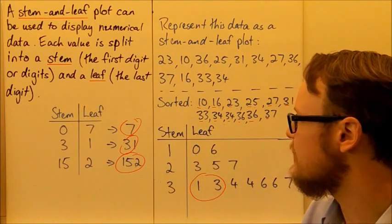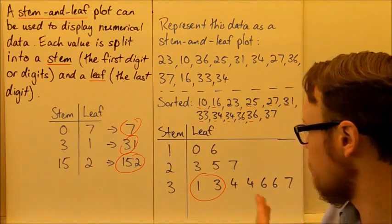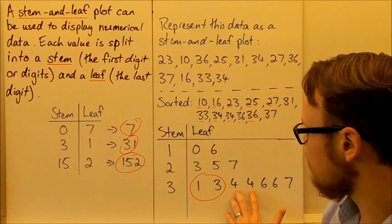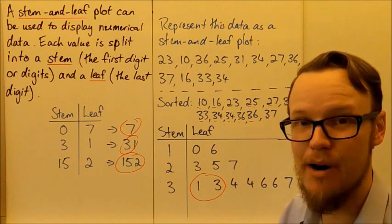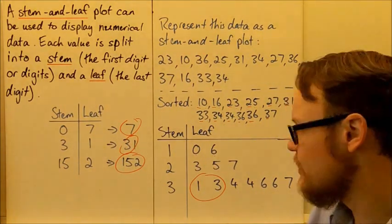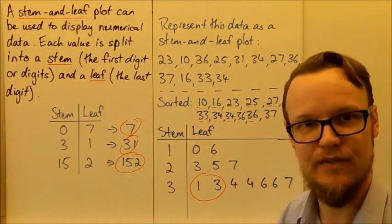We can also try and see our mode here for the most commonly occurring. We can see that the value 34 and 36 both occur twice. So our modes are 34 and 36 for this data set.